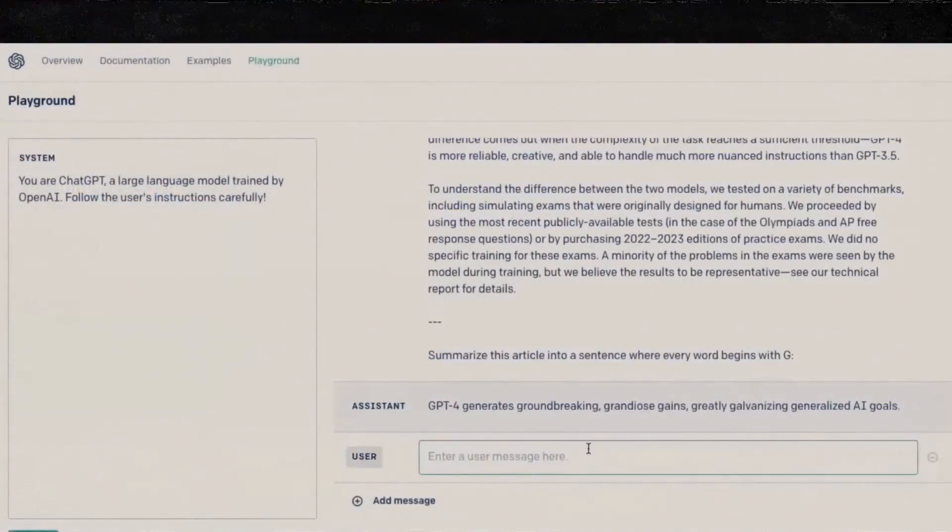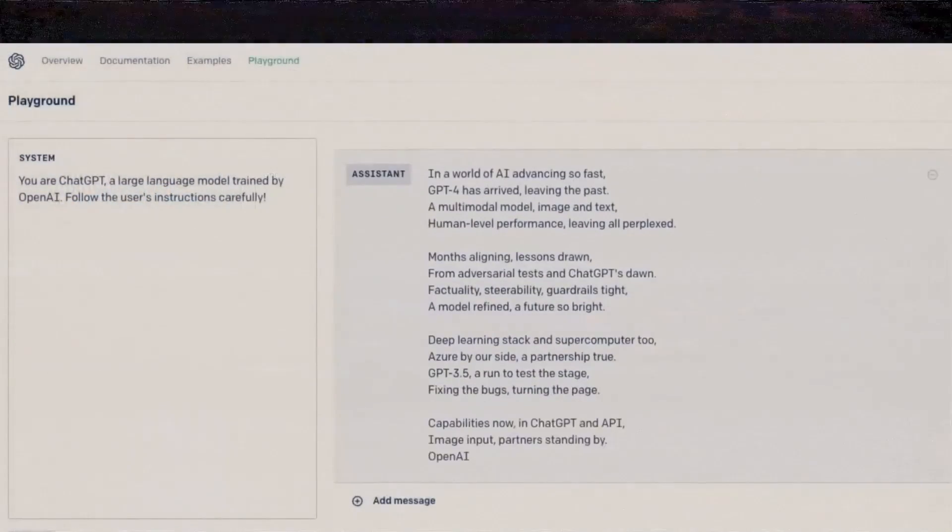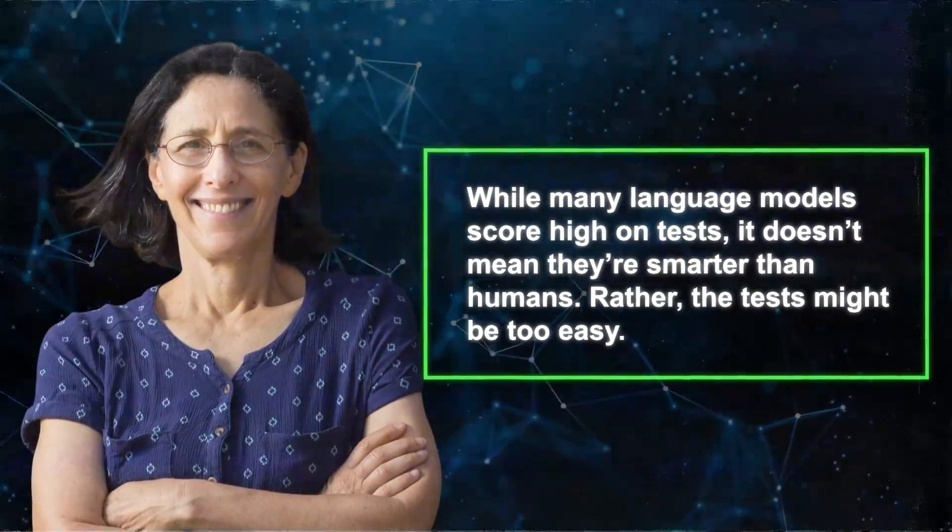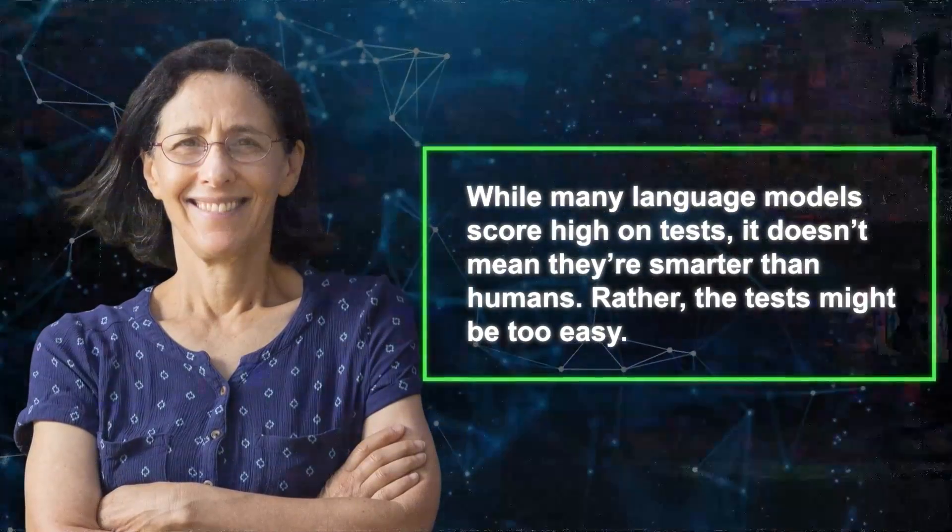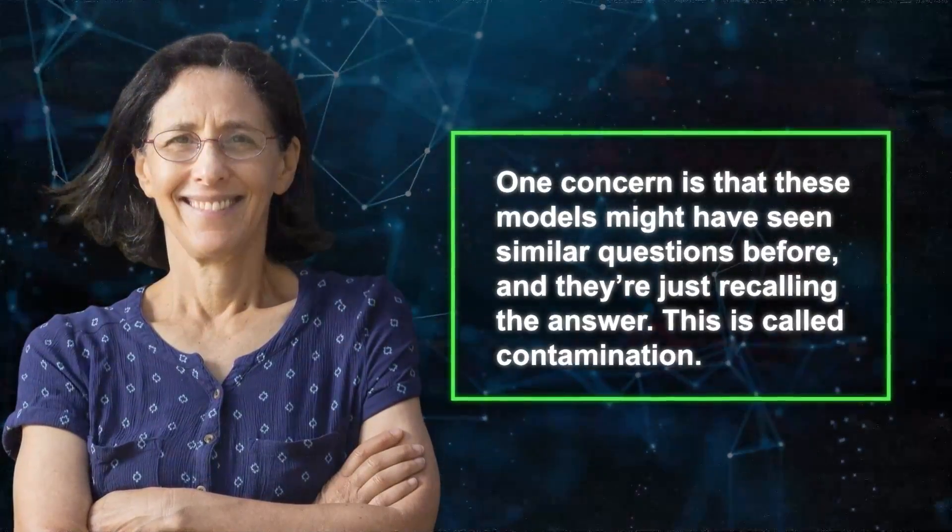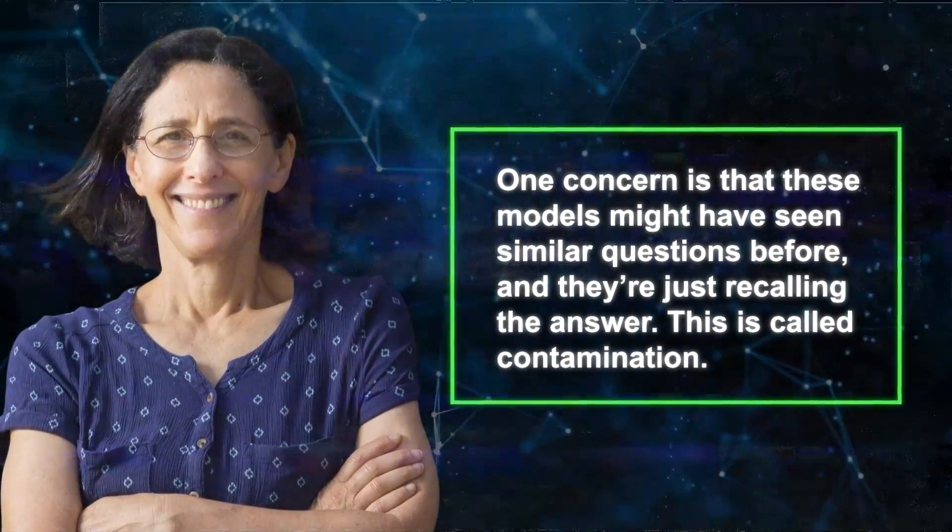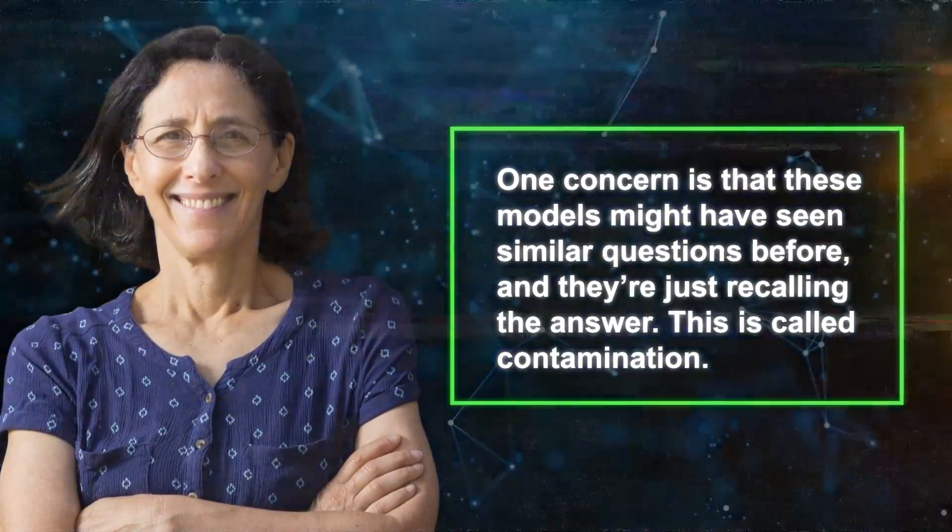When GPT-4 was launched, its creators at OpenAI checked its abilities using machine-specific benchmarks and human exams. GPT-4 did really well in most of them. Mitchell mentions that while many language models score high on tests, it doesn't mean they're smarter than humans; rather, the tests might be too easy. One concern is that these models might have seen similar questions before and they're just recalling the answer. This is called contamination.